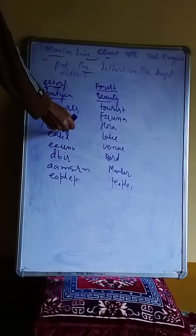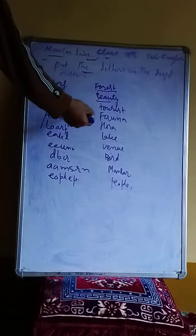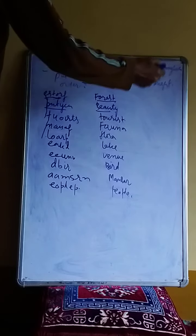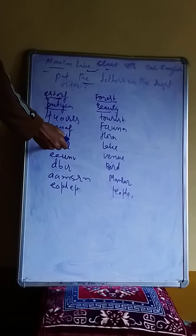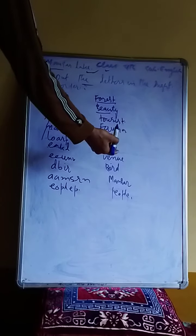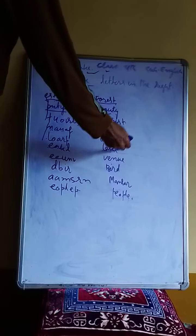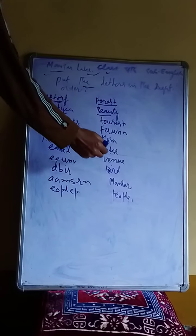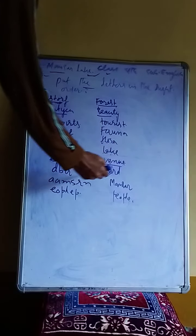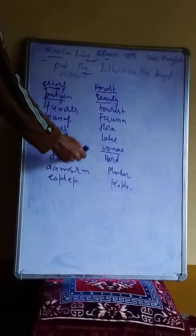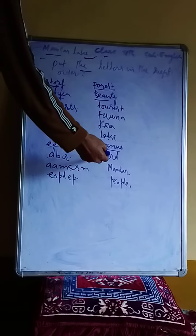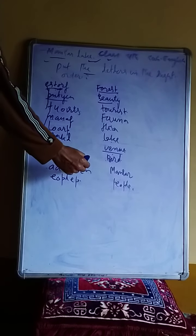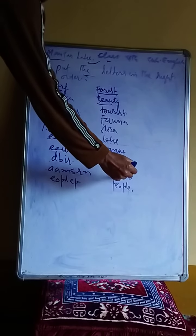L-O-A-R-F is a group of letters with no meaning. We arrange this in the right order to make F-L-O-R-E, the meaningful word FLORA. E-A-K-L arranged gives us L-A-K-E. E-U-N-V-E gives us V-E-N-U-E. D-B-I-R arranged gives us B-I-R-D, the word BIRD. A-A-M-S-R-N arranged gives us M-A-N-S-A-R, which is MANSAR.